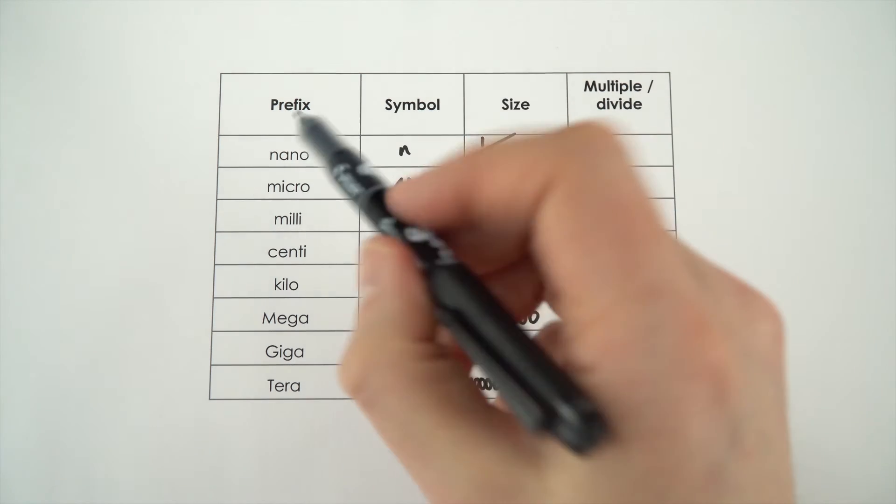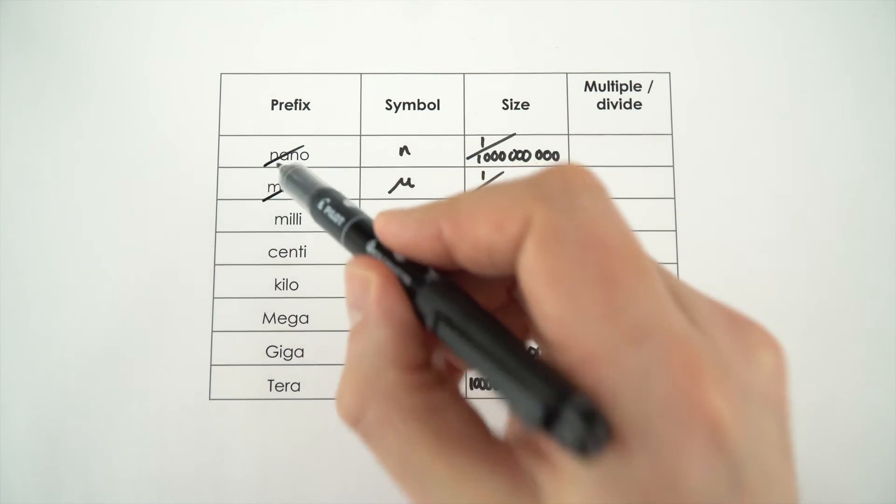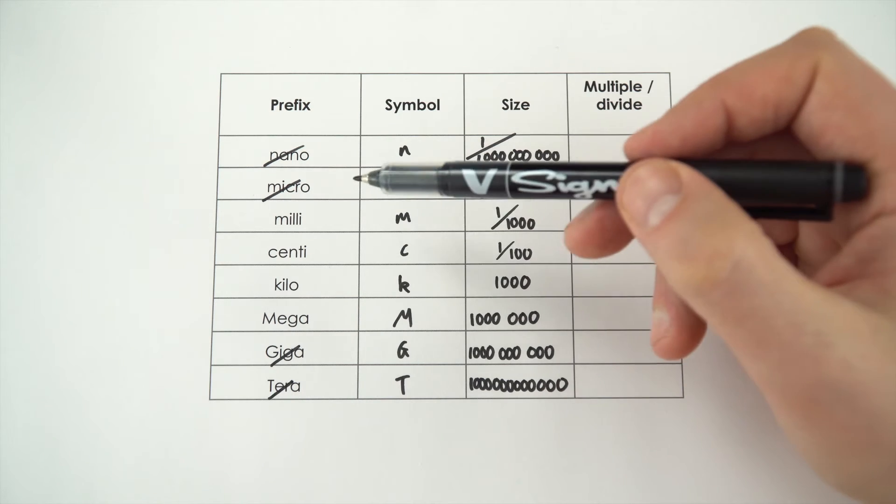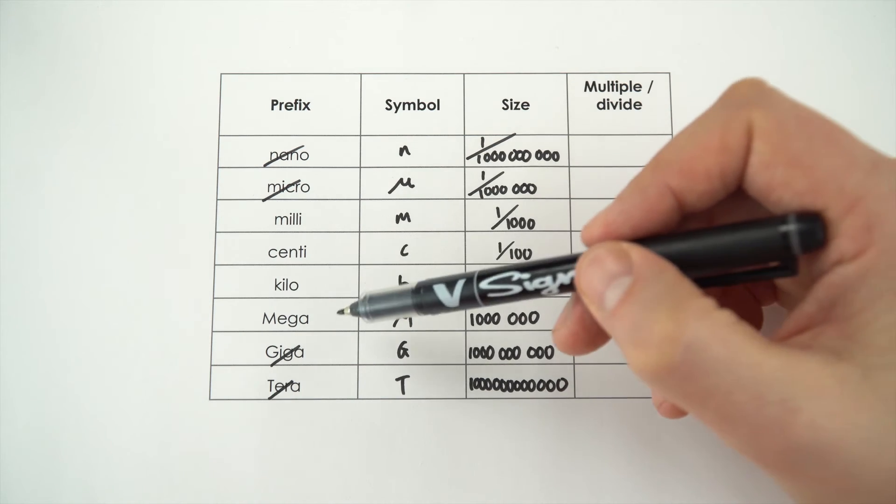Now when it comes to GCSE physics, we don't really use nano and micro, we maybe use mega, but we tend to very rarely use giga or terra. So the ones that you need to be able to convert from one to the other are milli, centi, kilo, and mega.